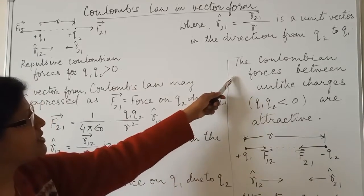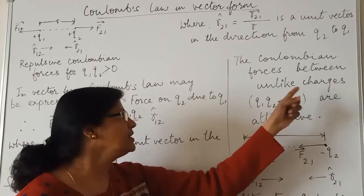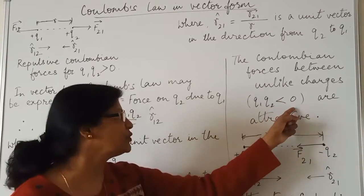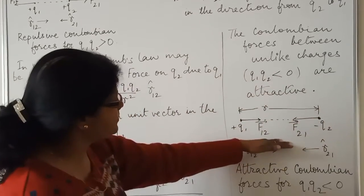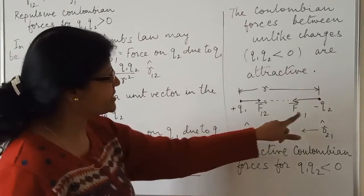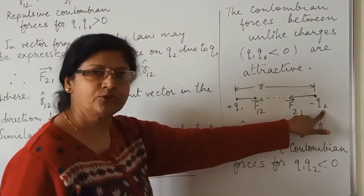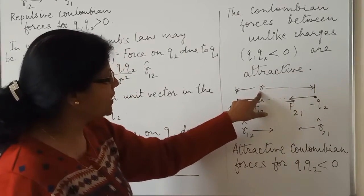The Coulombian forces between unlike charges, for unlike charges you see Q1, Q2 less than zero are attractive. Now see the diagram, we have considered two unlike charges, Q1 positive and Q2 negative. Let distance between them be R.